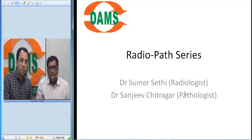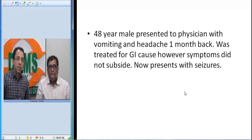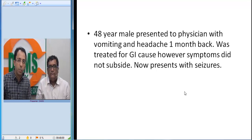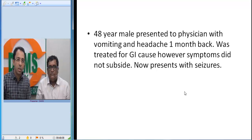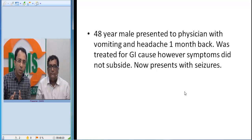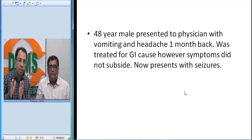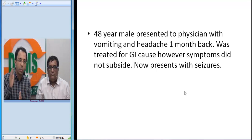Now we start with this case. This is a 48-year-old male who presented to a physician with vomiting and headache one month back. He was treated but symptoms did not subside, and now he has seizures. Whenever you have an adult with new onset seizure and a rapidly progressive history of one month, my mind is thinking of something more aggressive.